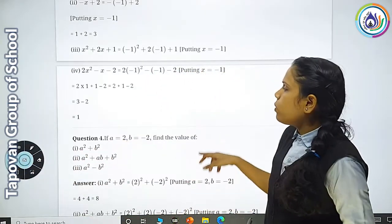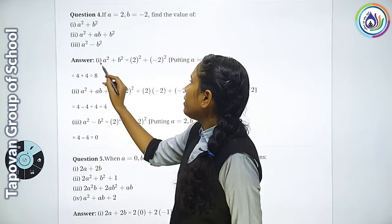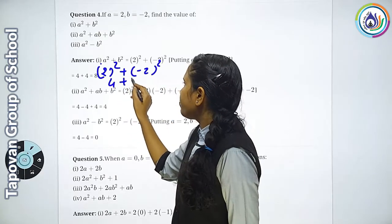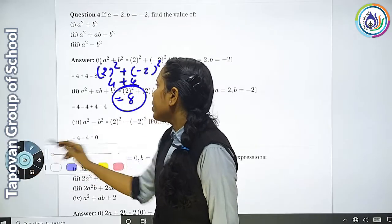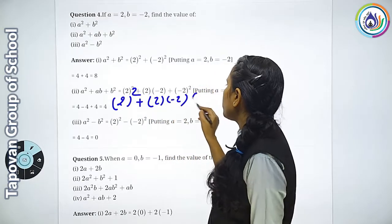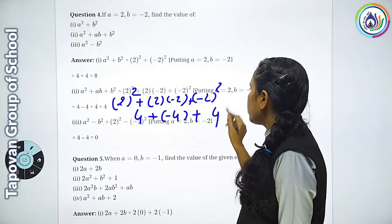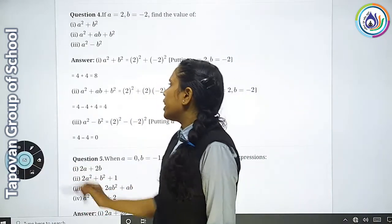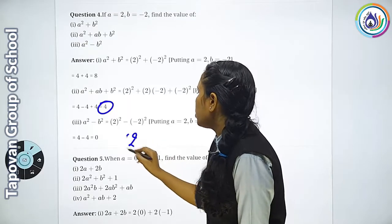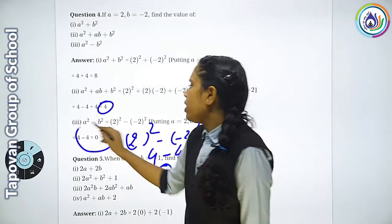Question number 4: a=2 and b=minus 2. Find the value. a²+b²: 2²+(-2)²=4+4=8. Second: a²+2ab+b²: 4+2×(2)×(-2)+4=4-8+4=0... answer 4. Third: a²-b²: 2²-(-2)²=4-4=0. Answer 0.